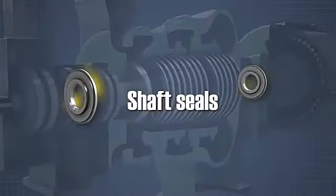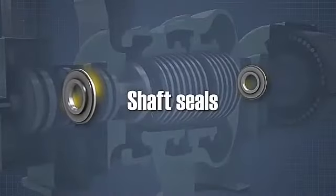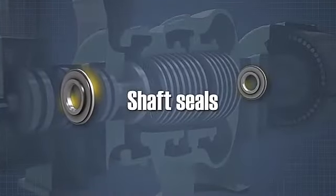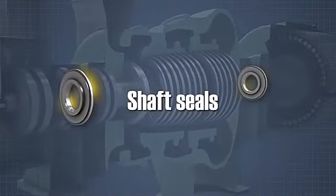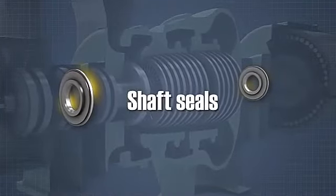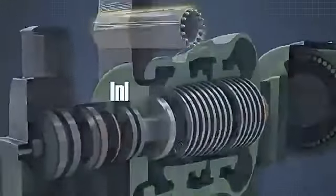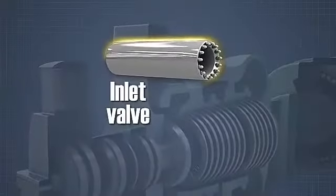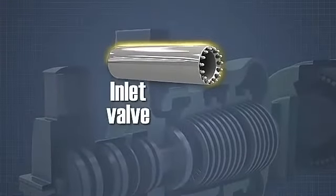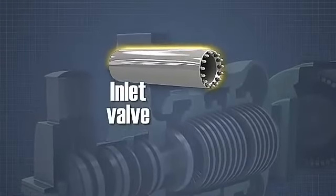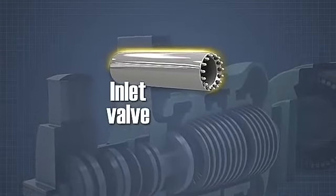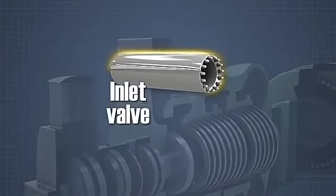Shaft seals contain the steam in the casing and keep any air out of the condensing unit. An inlet valve or valves control the flow of steam to the turbine.